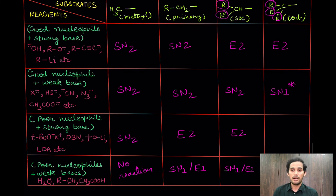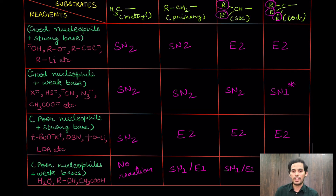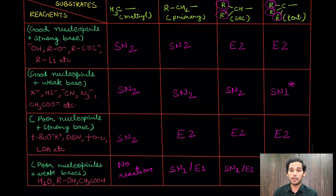For tertiary substrates with a poor nucleophile and strong base: the only option is E2 — the judgment is straightforward. When left with poor nucleophiles and weak bases like water, alcohol, or acetic acid, tertiary substrates have only two options occurring simultaneously: SN1 and E1. Again, temperature is the important factor — higher temperature favors E1, lower temperature favors SN1.